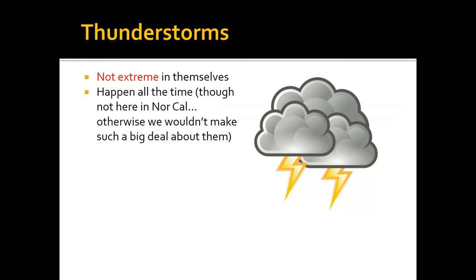Every so often, the right setup falls into place and boom, we can get thunderstorms. Here in Northern California we make a big deal out of them because they're so rare. However, in much of the United States they're just a part of normal everyday life — nothing that would make a headline on the news. But here in California, because we're not used to them, we make a pretty big deal when they happen.